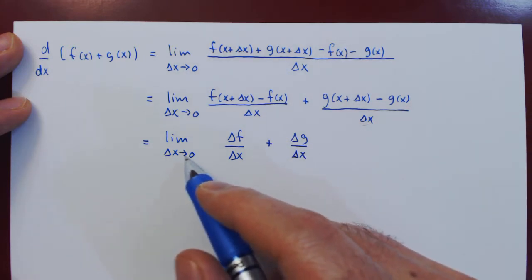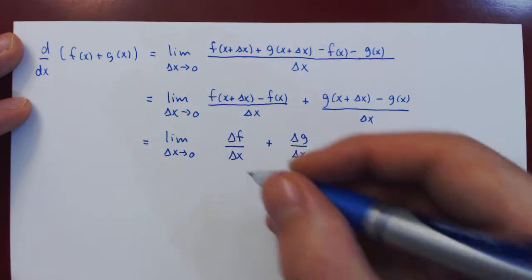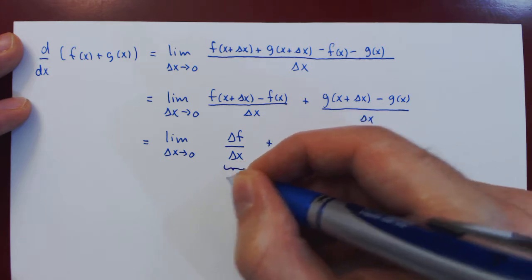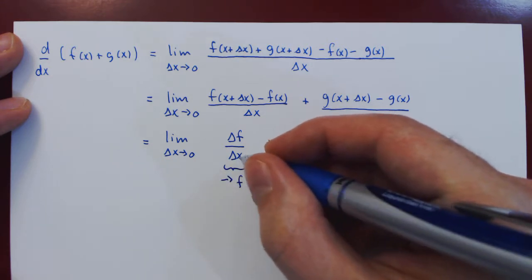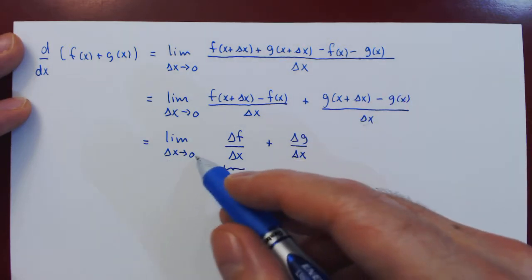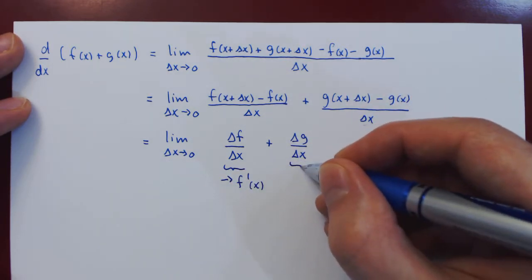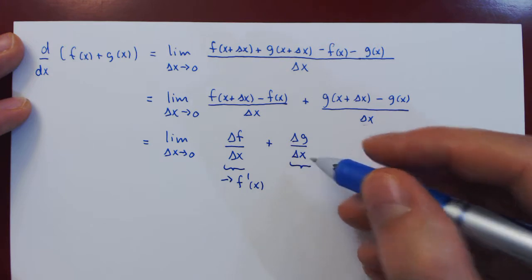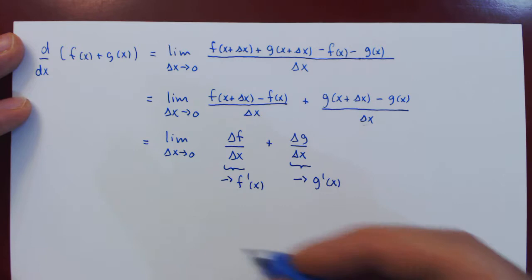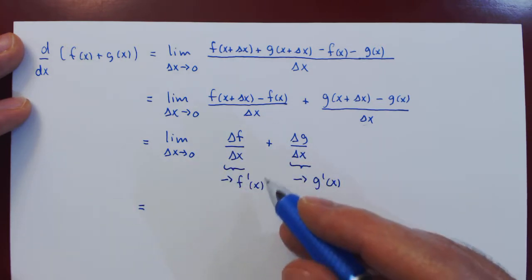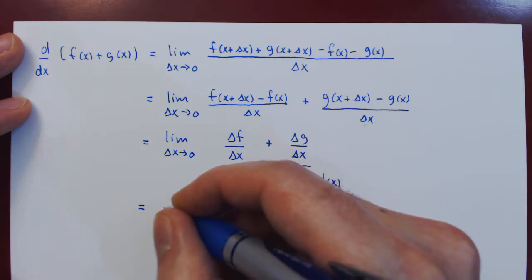And as delta x approaches 0, delta f over delta x approaches the derivative of the function at the point x. And again, as delta x approaches 0, delta g over delta x approaches the slope, the derivative of the function g at the point x. So, in the limit our final answer is simply f prime of x plus g prime of x.